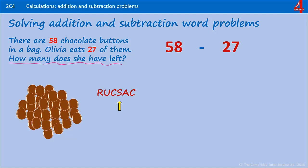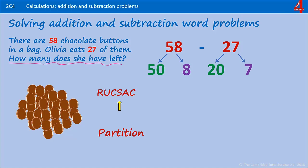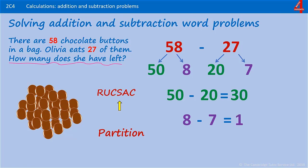To solve this, we are going to use partitioning. 58 partitioned is 50 and 8 ones. 27 partitioned is 20 and 7 ones. This time we are taking away. 50 take away 20 leaves us with 30. Now taking away the ones: 8 take away 7 leaves us with 1.